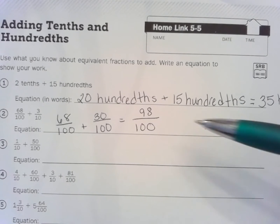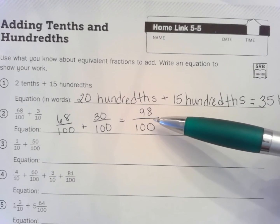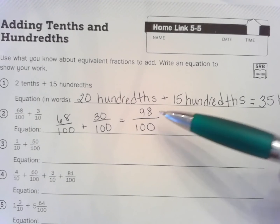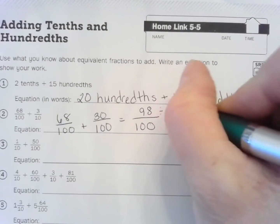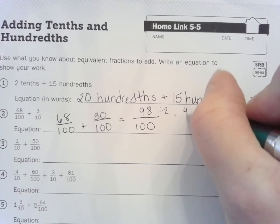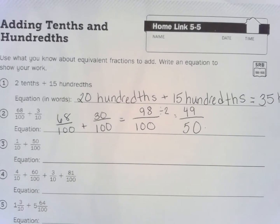Now look, 98 hundredths, that can be simplified, right? So remember the halves trick we used earlier today. So 98, you can cut that in half. What is 98 divided by 2? Well, half of 90 is 45, and half of 8 is 4, so 45 plus 4, that's 49, right? And half of 100, well, that's 50, we know that. There we go, just like that.